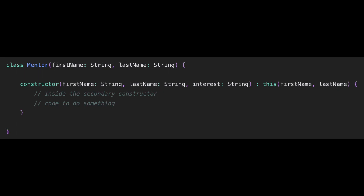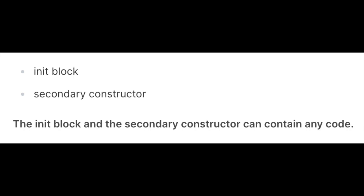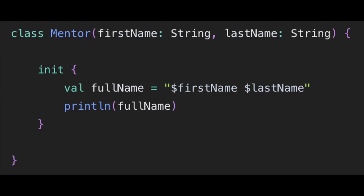Now here comes the init block into the picture. The two things we can use to put some code during initialization of an instance are: first, the init block; second, the secondary constructor. Both the init block and the secondary constructor can contain any code. Suppose we have a Mentor class with a primary constructor and an init block like this.